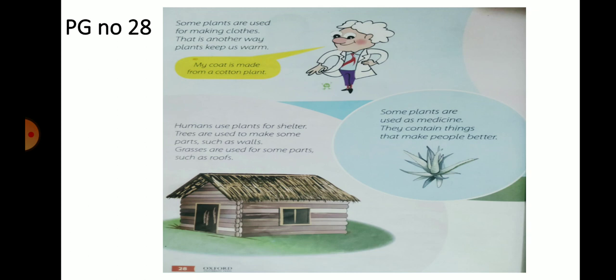Humans use plants for shelter. Trees are used to make some parts such as walls; grasses are used for some parts such as roofs. Plants ko hum ghar banane ke liye bhi istamal karte hain. Darahtton ki lakdi ko hum diwarein banane ke liye istamal karte hain, aur grass ko hum roof yani ke chhat banane ke liye istamal karte hain.